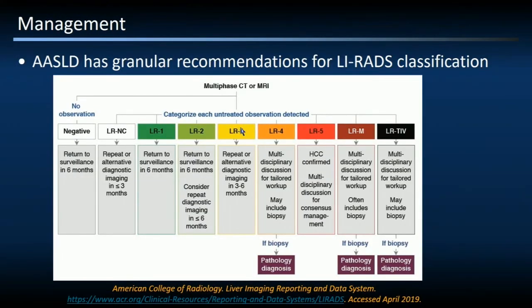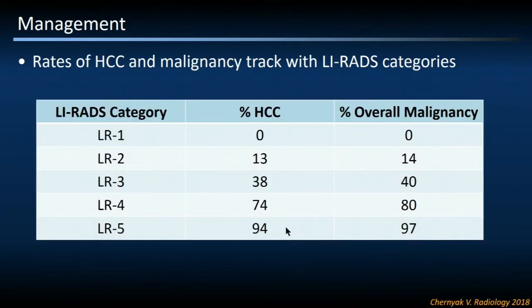LIRADS is also beneficial because it gives relatively granular treatment recommendations, helping standardize not only classification and nomenclature but also what to do with lesions — ranging from return to surveillance imaging, to definitive action for LIRADS 5 lesions, to other imaging or tissue biopsy if necessary. From an auditing standpoint, you can track what these lesions become. LIRADS data shows that at the extremes, LIRADS 1 has a 0% HCC rate and LIRADS 5 has a 94% rate of HCC, mirroring the BI-RADS experience. Middle-category lesions have a relatively larger range of HCC probability.